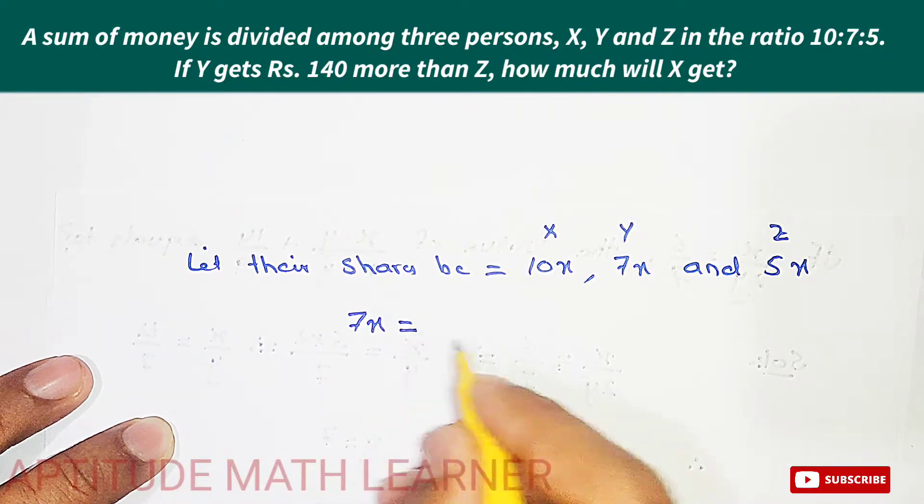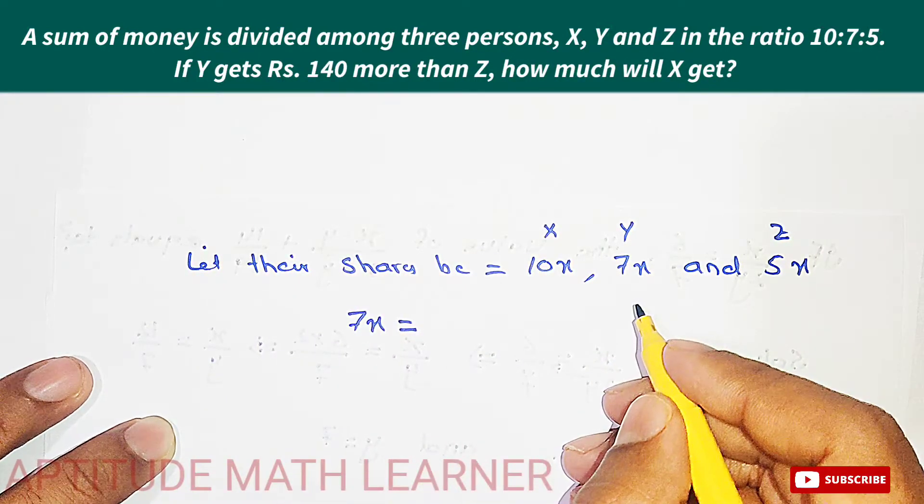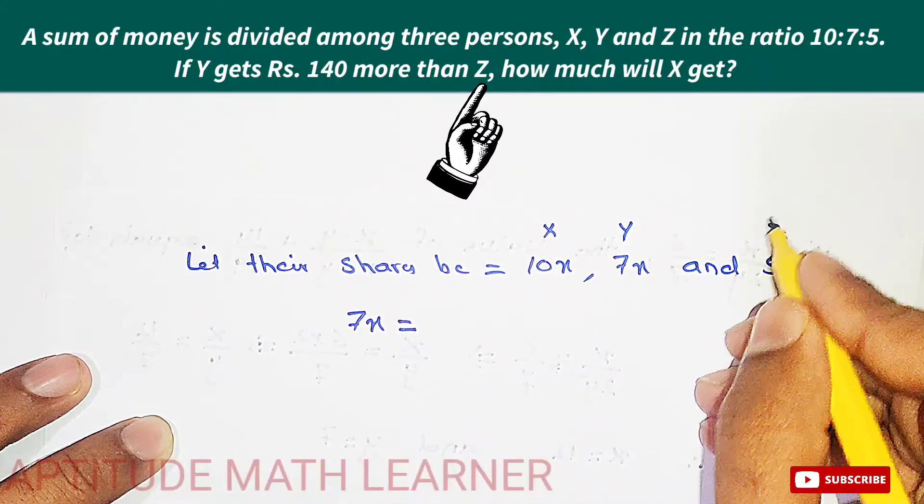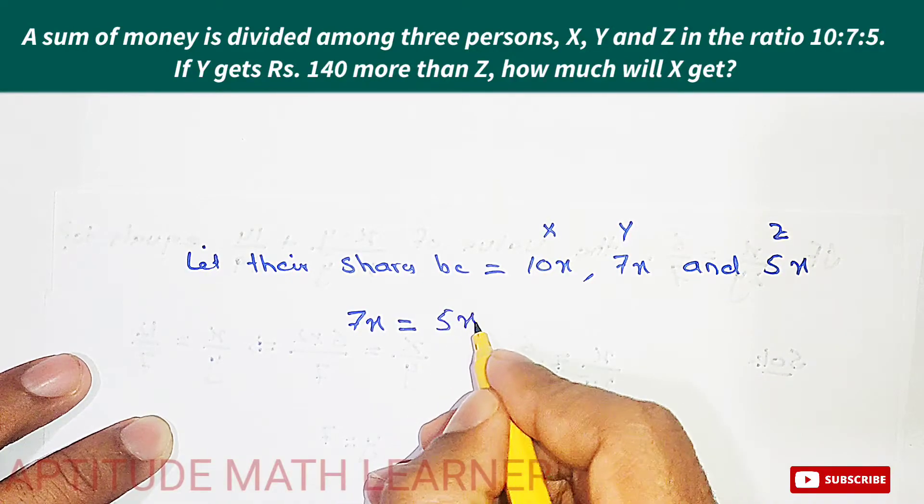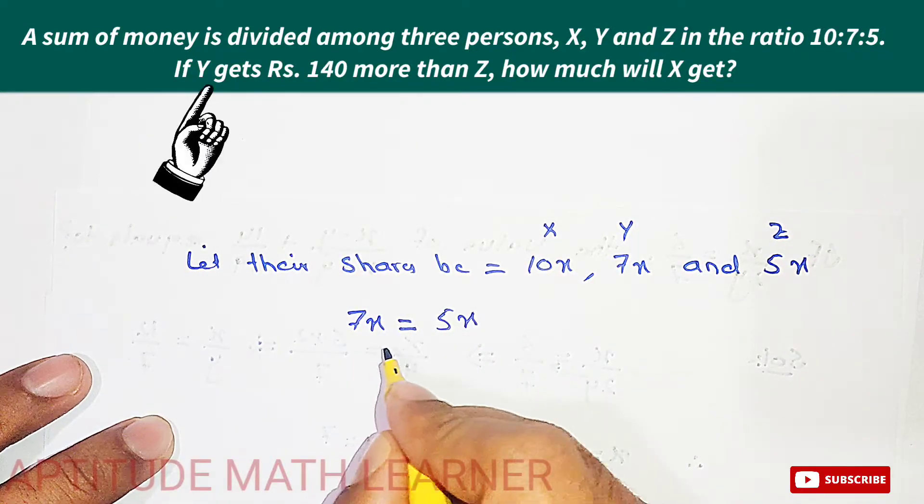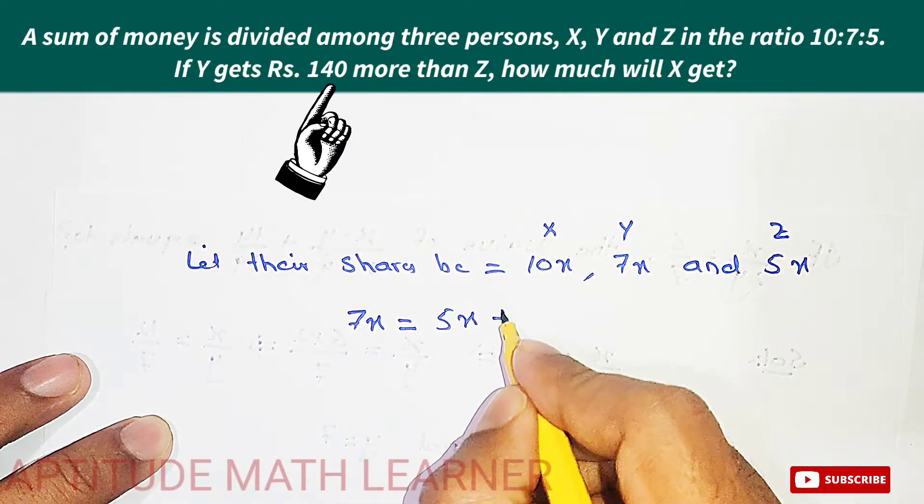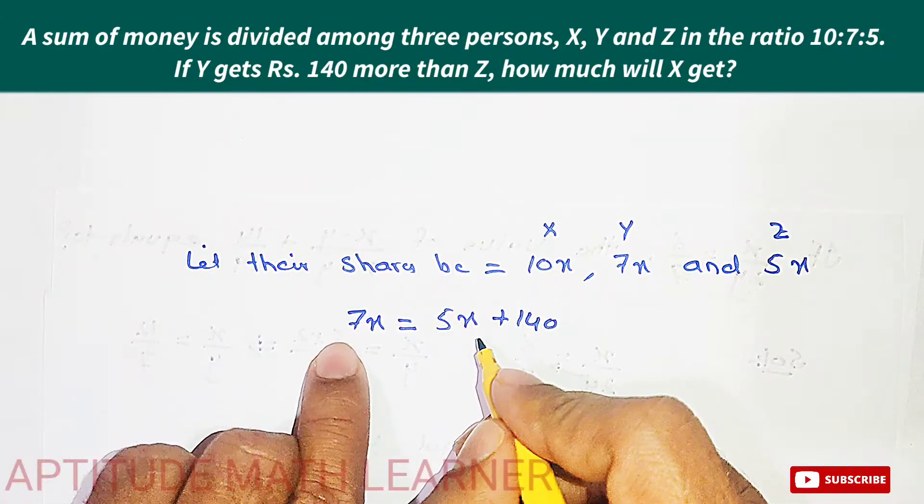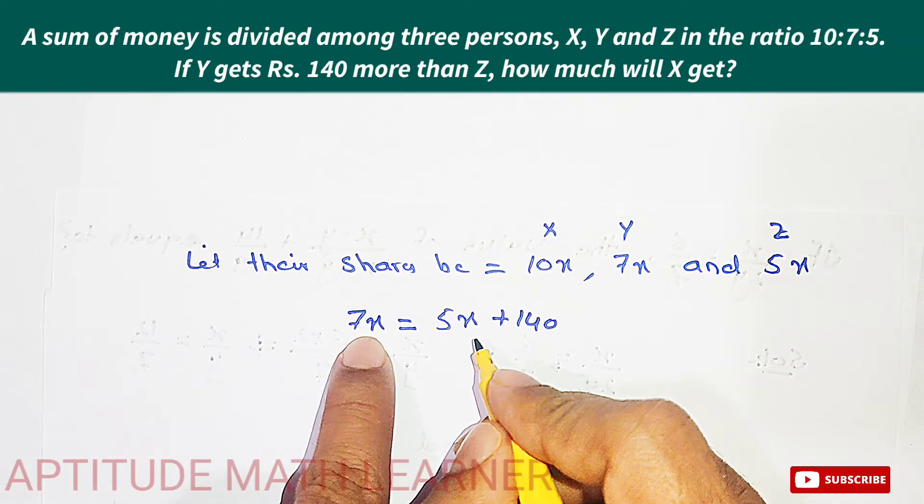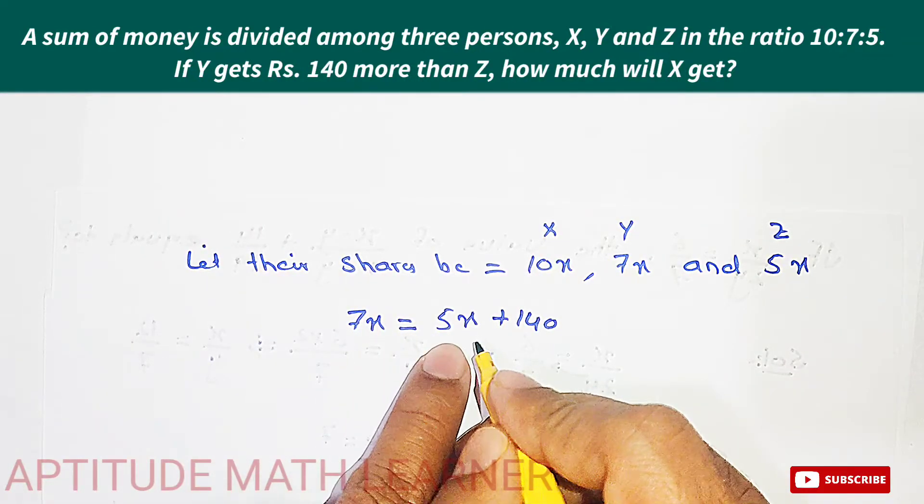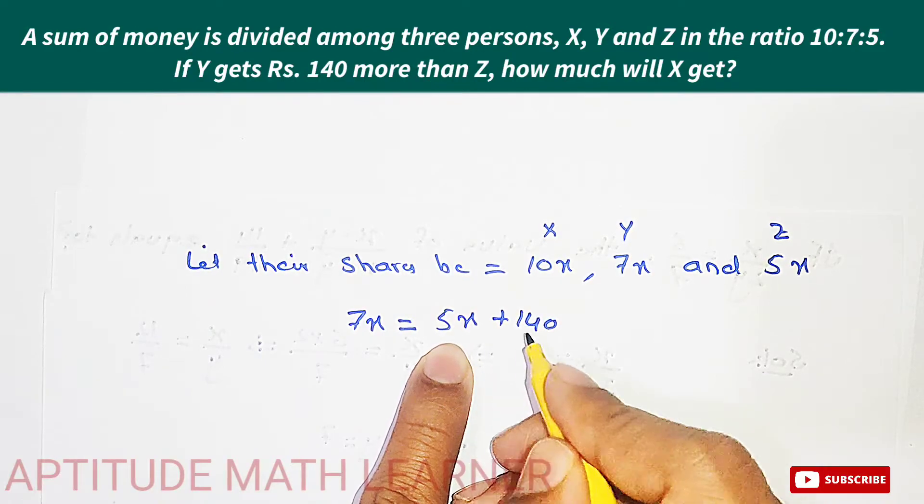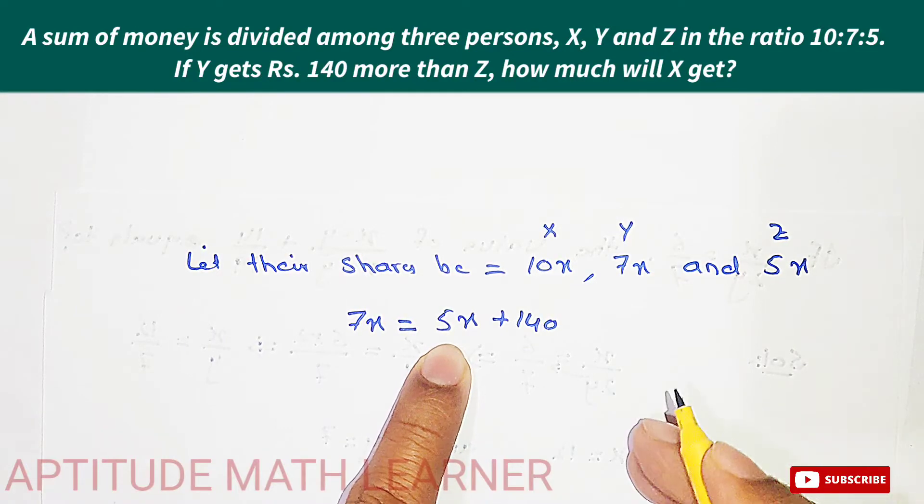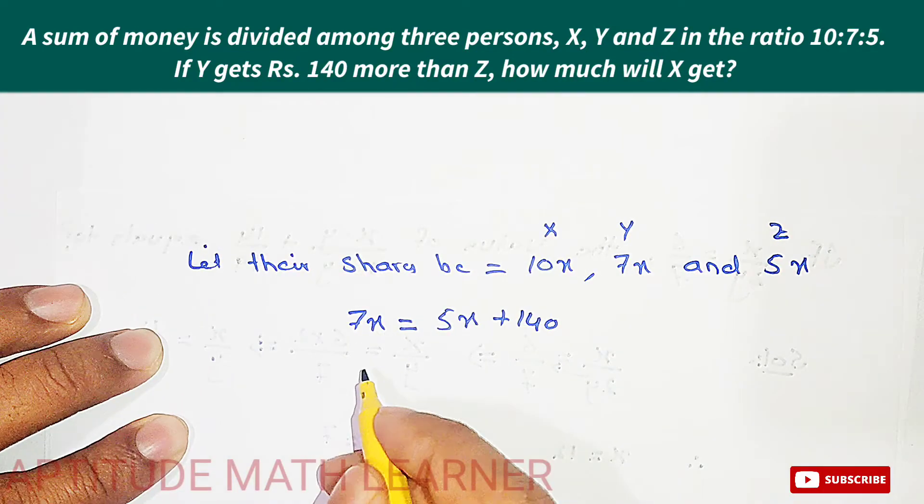7x equals what? It says 140 more than Z. We have the value for Z, that is 5x, but Y is having 140 more than Z. So Y's share is Z plus 140, meaning 7x equals 5x plus 140. I hope you have understood till here.